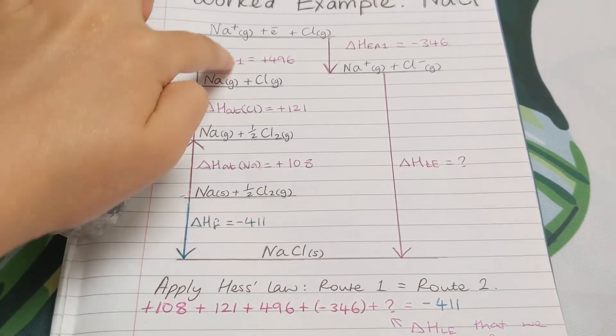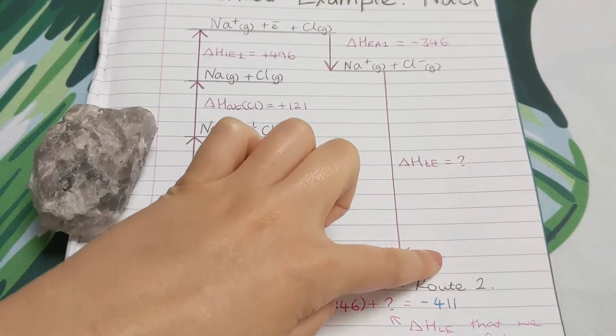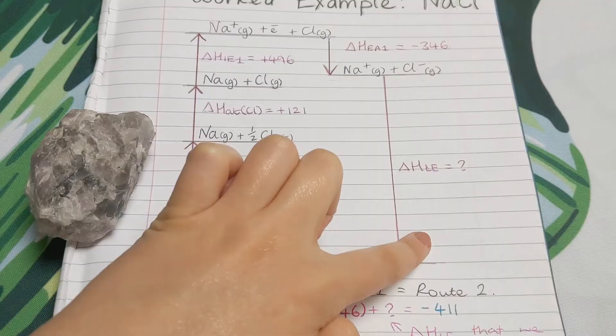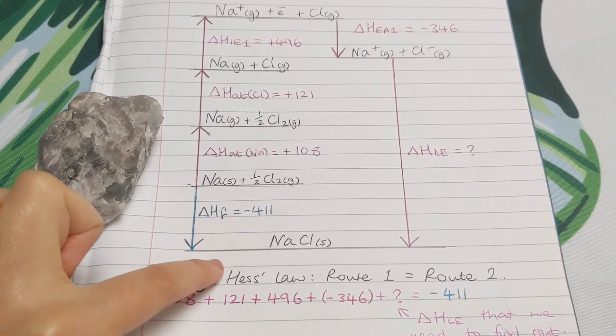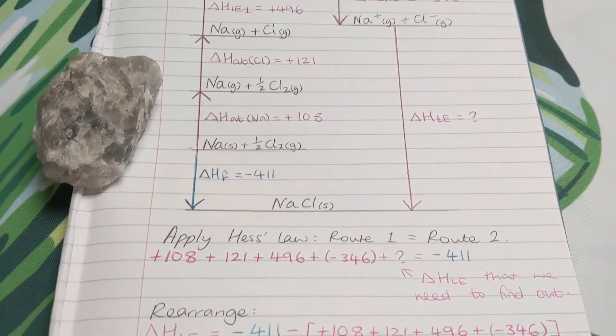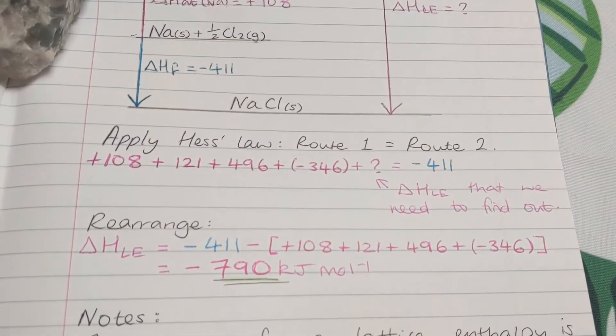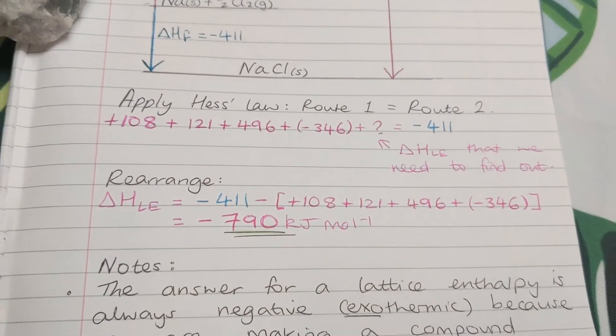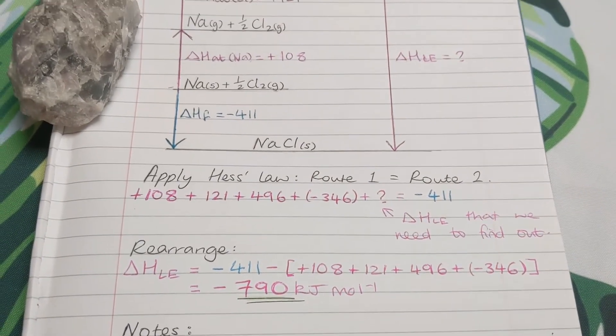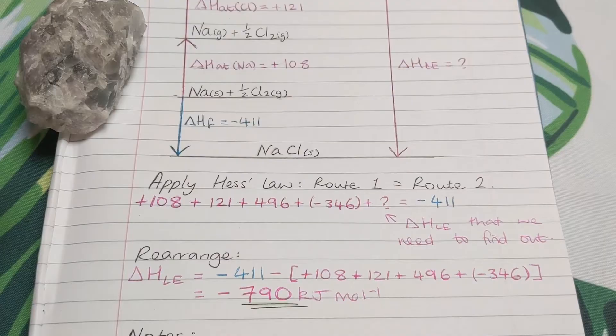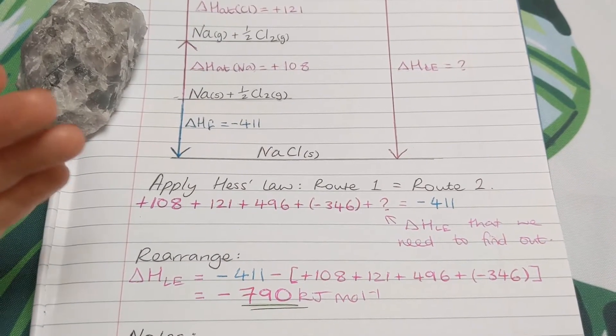We can go all the way around here, or we can just go directly from here to here. So two routes, I've done it in colours, so you can see route one, I've done in pink. All the arrows are going clockwise. And route two, I've done in blue. One arrow going anticlockwise. Now if you remember, if you think back to Hess's law, a simple definition of Hess's law is that route one, to get to a certain point, is equal to route two.